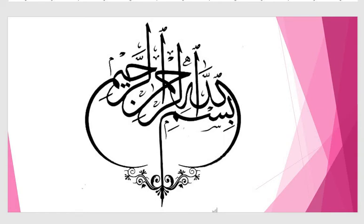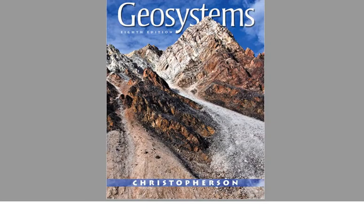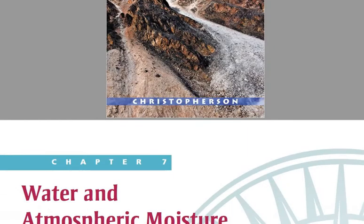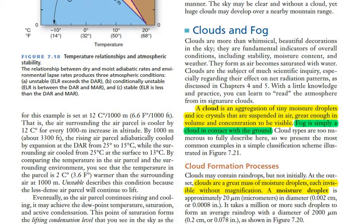Bismillahirrahmanirrahim, assalamu alaikum. Welcome back to the video lecture series for course number 301, Physical Geography. We will continue with chapter number seven from Geosystems by Robert Christopher. Today we will talk about clouds and fogs.